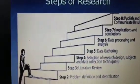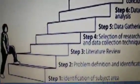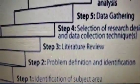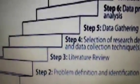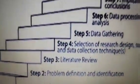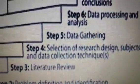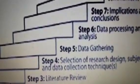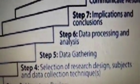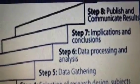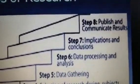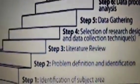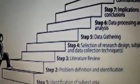There are various steps arranged like a staircase: the first is identification of subject area, the second is problem definition and identification of the research area, and the third — which I will deal with today — is literature review. The fourth step is selection of research design, subjects, and data collection techniques. The fifth is data gathering, the sixth is data processing and analysis, followed by implications and conclusions, and lastly, publishing and communicating results.